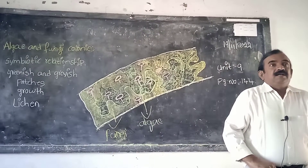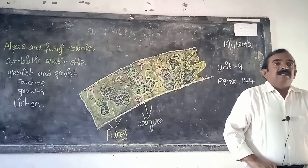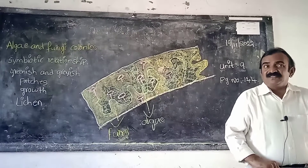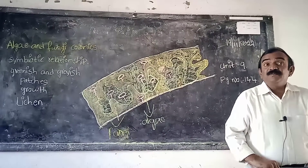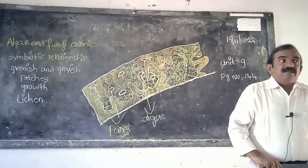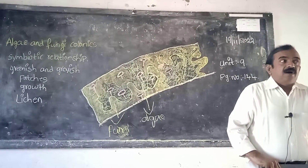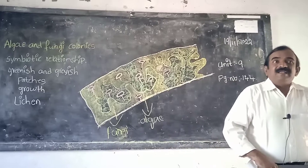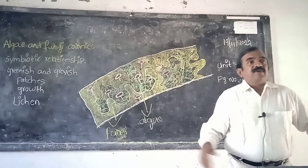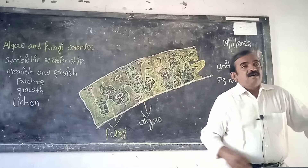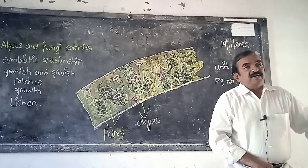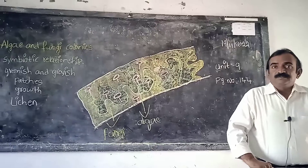Name the green colored organisms that grow on the branches of a tree — algae. Name the grayish colored organisms which grow on the branches of a tree. What type of relationship do we observe among algal forms and fungi? Symbiotic relationship. Okay, thank you.